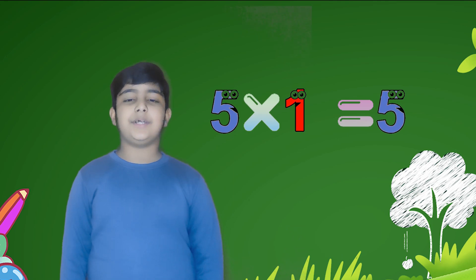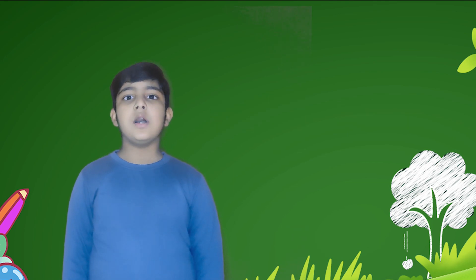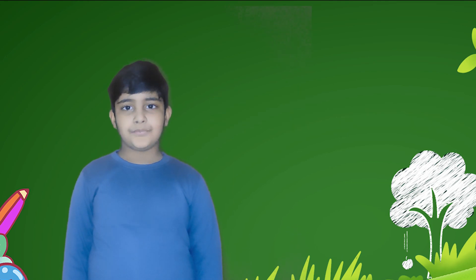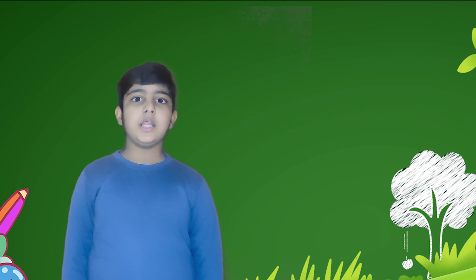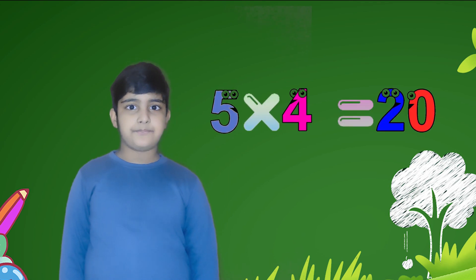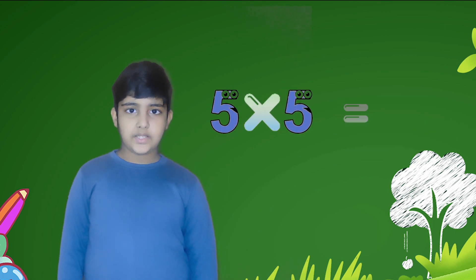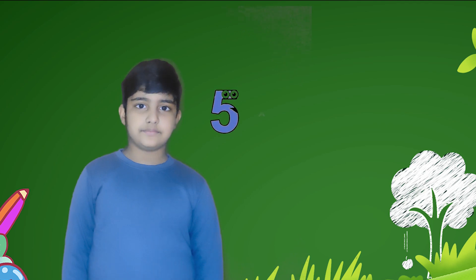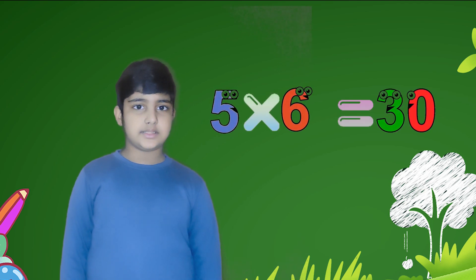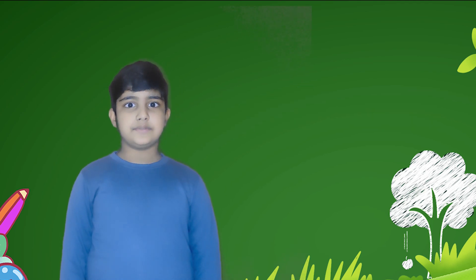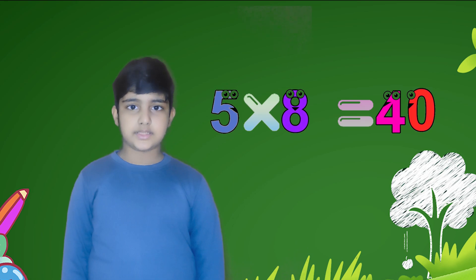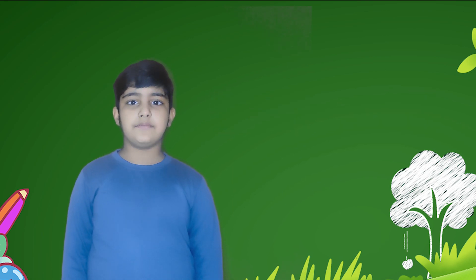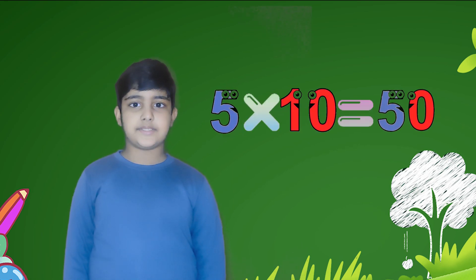Five ones are five, five twos are ten, five threes are fifteen, five fours are twenty, five fives are twenty-five, five sixes are thirty, five sevens are thirty-five, five eights are forty, five nines are forty-five, five tens are fifty.